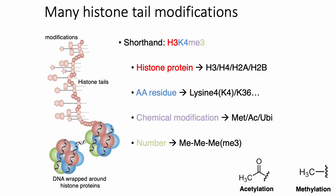Because there are so many different types of histone tail modifications, people have devised a systematic way of naming them. Generally, there are three to four parts of a histone modification name. For example, H3K4me3: H3 tells you which histone protein is being modified; K4 tells you which amino acid is being modified, in this case the fourth lysine; ME tells you the chemical modification (ME for methylation, AC for acetylation, UBE for ubiquitination); and the three indicates three methyl groups are being added, i.e., trimethylation.